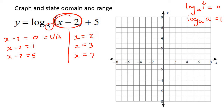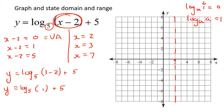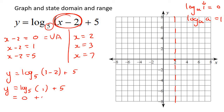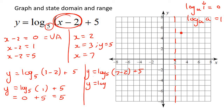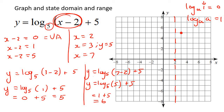If x is 2, that's your vertical asymptote — plot that. For x equals 3, plug into the equation: log base 5 of (3 minus 2) add 5, which is log base 5 of 1, add 5. Since the argument is 1, that part is 0. So 0 add 5 equals 5. When x is 3, y is 5. For x equals 7: y equals log base 5 of (7 minus 2) add 5, which is log base 5 of 5 add 5. Those two numbers are the same, so that part equals 1. That's 1 plus 5, which is 6. When x is 7, y is 6.